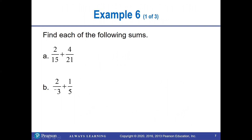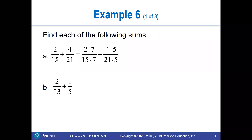The easiest thing to do is get a common denominator. For example, with denominators 15 and 21: 15 is 3 × 5, and 21 is 3 × 7. They both have a 3 in common.